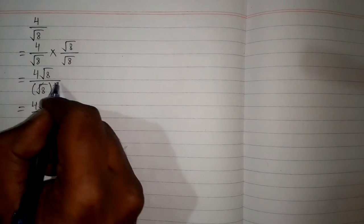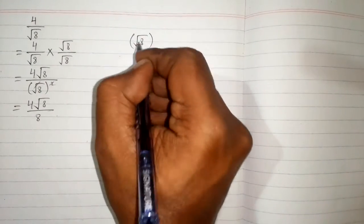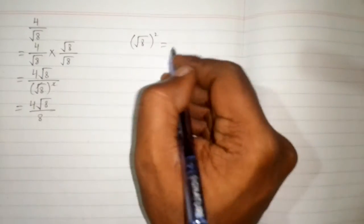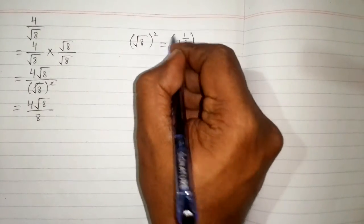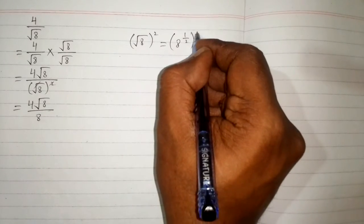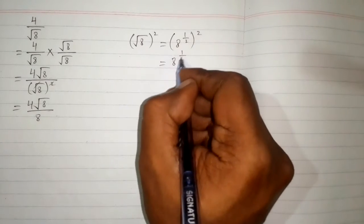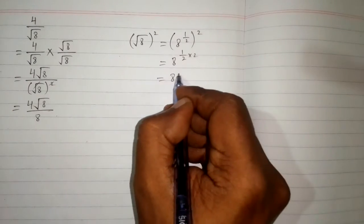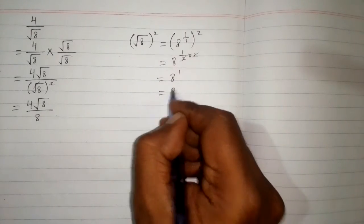To understand how we can cancel this square root and this square, we evaluate that the square of square root of 8 equals 8. We know that square root of 8 means 8 raised to the power 1/2, and when raised to the whole power 2, by the rule of indices these powers are multiplied: 8 raised to the power 1/2 × 2 gives 8 raised to the power 1, which equals 8.